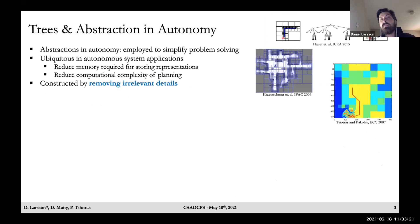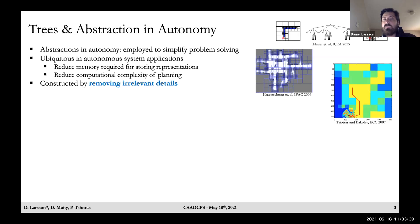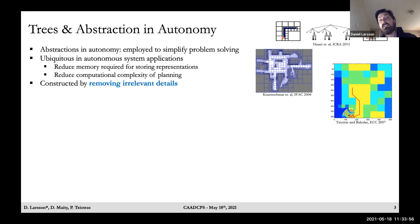Resource-limited agents must compress and abstract environments to transmit maps across capacity-limited channels and to limit information processing in accordance with their available onboard resources. Abstractions and autonomy are employed in general to simplify problem solving — at the highest level, generating abstractions is the process of removing irrelevant details. They are mainly employed to reduce memory required for storing representations and to reduce the computational complexity of planning by generating reduced graphs and then executing Dijkstra or A* search algorithms on the reduced graph.